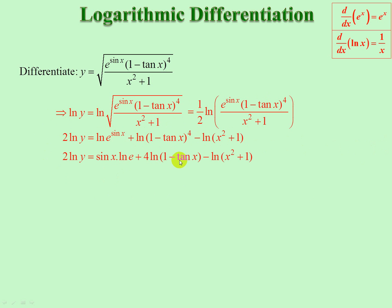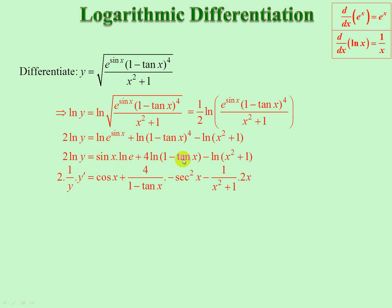Notice we cannot distribute ln to each of those individual terms inside — these are as they are. Ln of e is 1. Now we take the derivative of both sides: 2 times 1 over y times y prime. The derivative of sine of x is cos x, plus 4 times 1 over that for the derivative, times the derivative of the inside — derivative of minus tan x is minus sec squared x, minus 1 over x plus 1 times derivative of x squared plus 1, which is 2x. This becomes 2 over y, which multiplies on the other side as y over 2. There is your derivative by logarithmic differentiation.